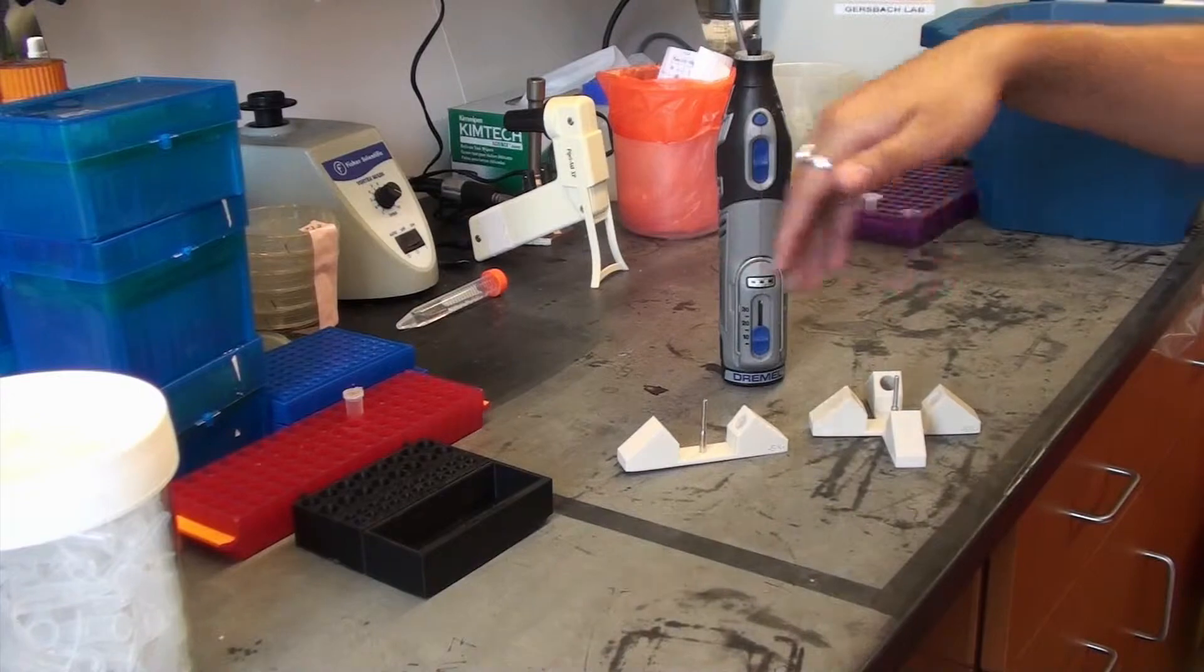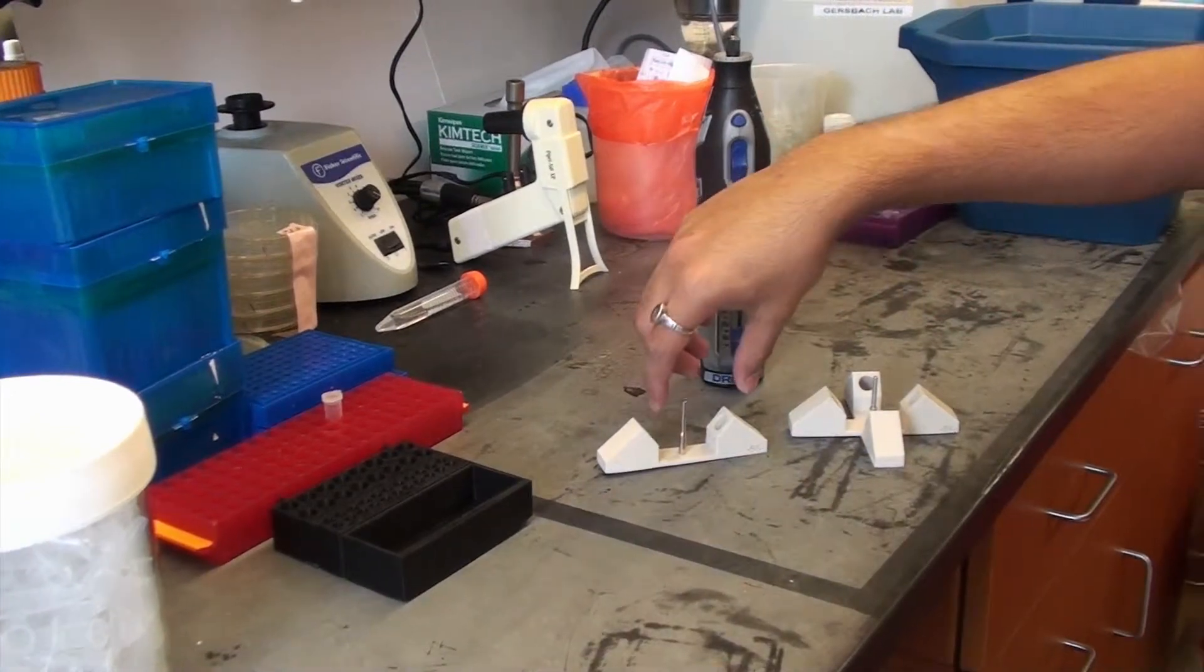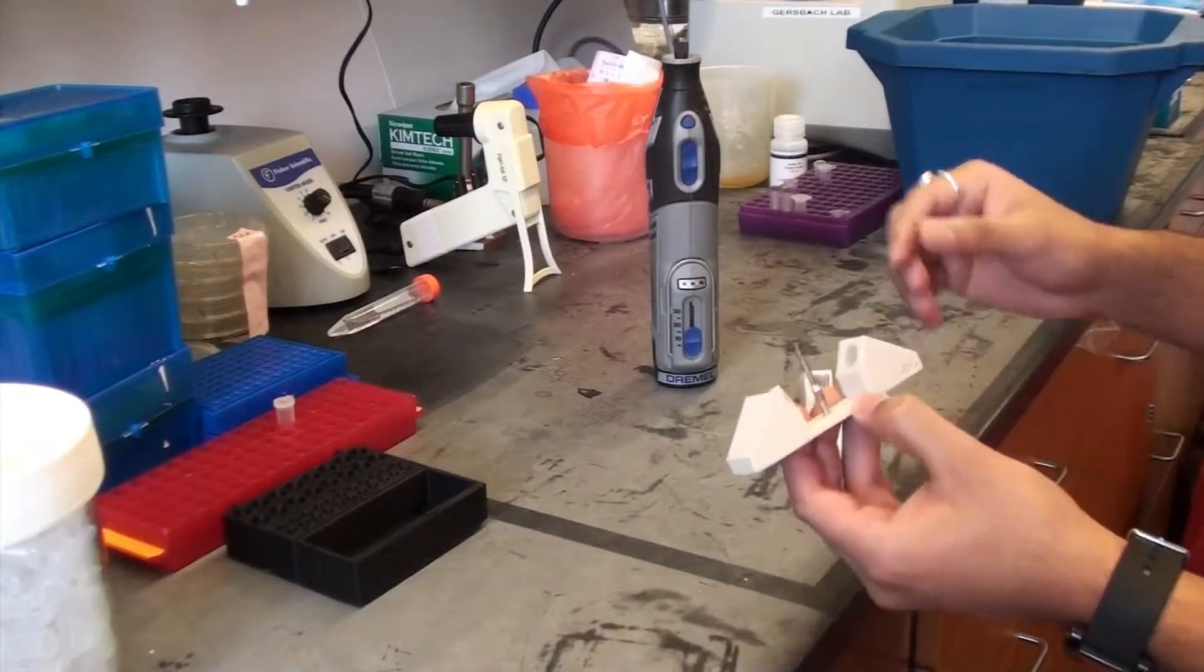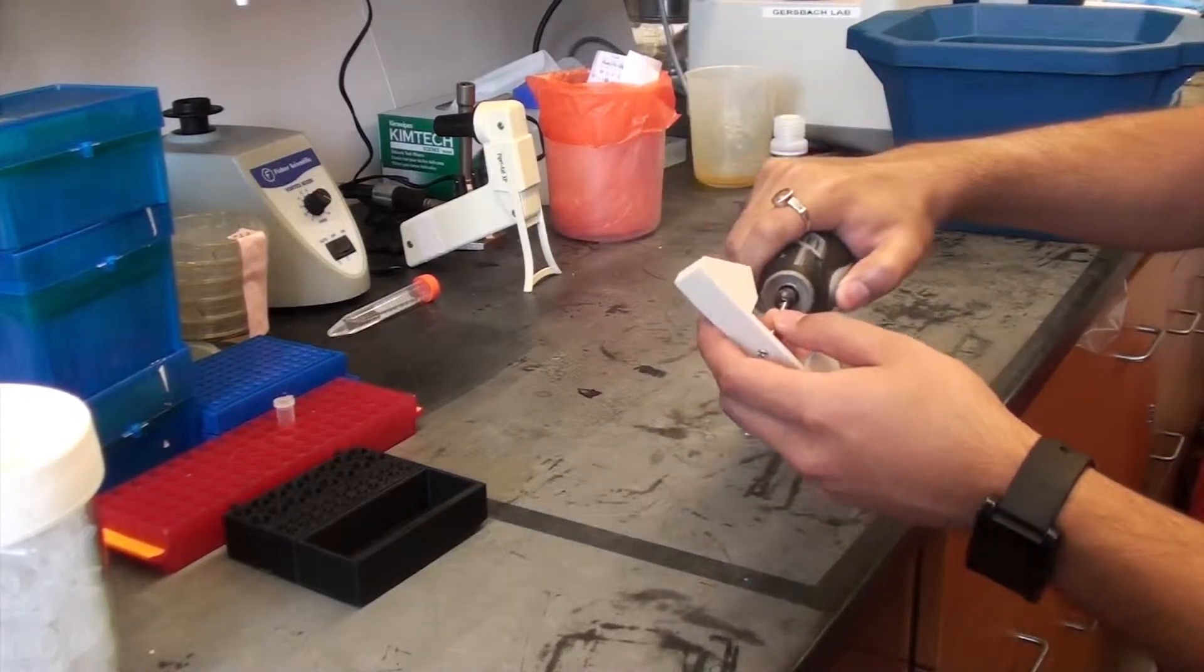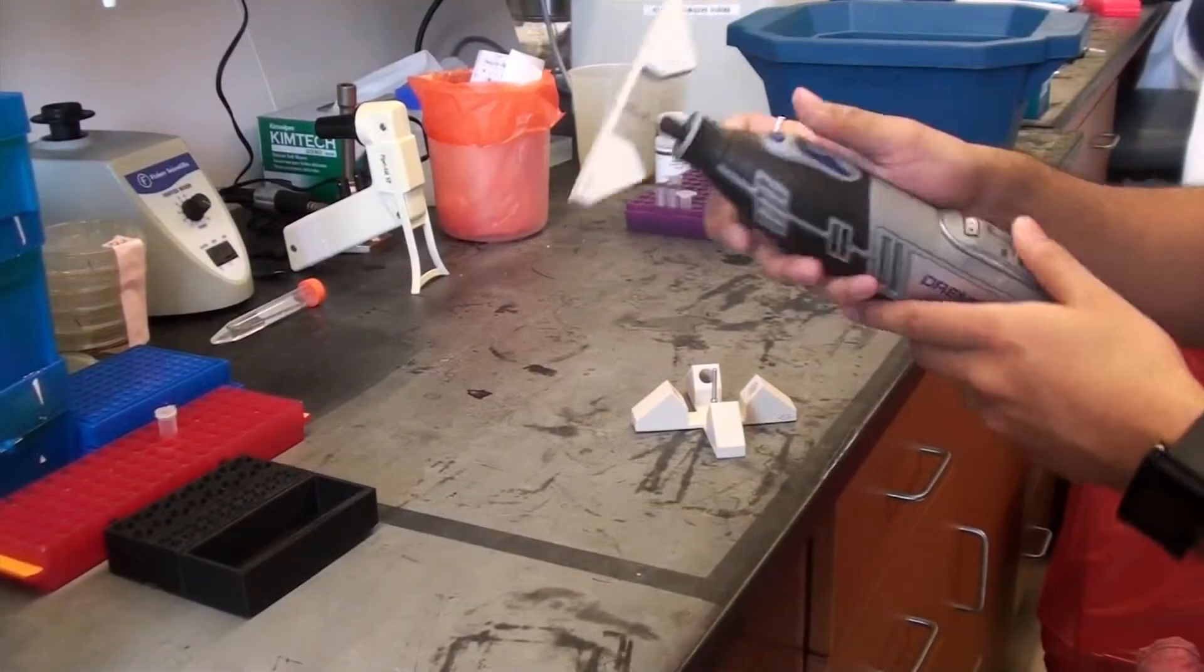These are two versions of the 3D printed centrifuge. This is a dual rotor. This is a quad rotor. And you can take this and just insert it into the drum tool. And voila!